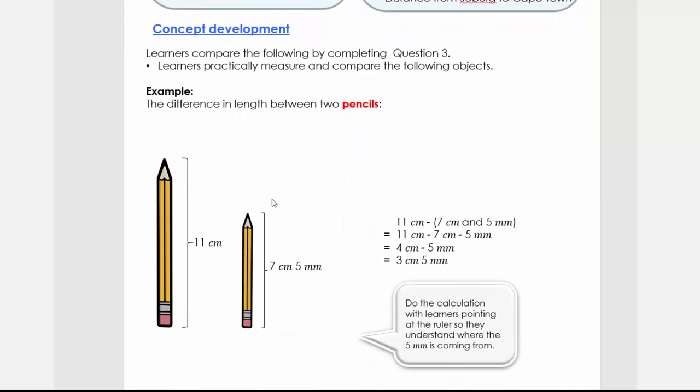Welcome back. What we're going to do today is compare the length of two objects. In this case, we have two pencils. We're going to measure them. This pencil measures 11 centimeters and this one's 7 centimeters and 5 millimeters. What are we going to do to find the difference between them?